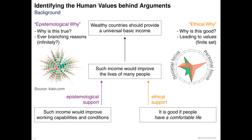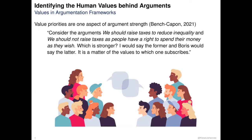Ethical reasoning, on the other hand, is based on a finite set of values worth striving for. If one were to order these values on a circle, as one particularly widespread value taxonomy does, one could then draw a visualization counterpart to the discussion topology, showing which values each side of the discussion resorts to in their arguments, thus revealing disagreements on an ethical level, namely which values are prioritized by whom. The analysis of such disagreement is not new in computational linguistics.